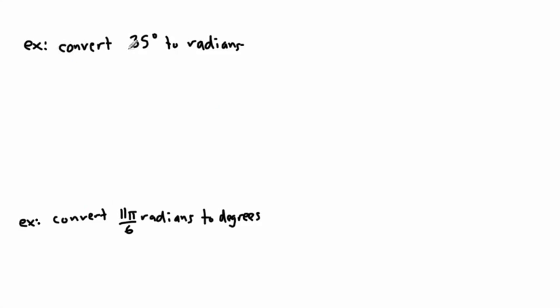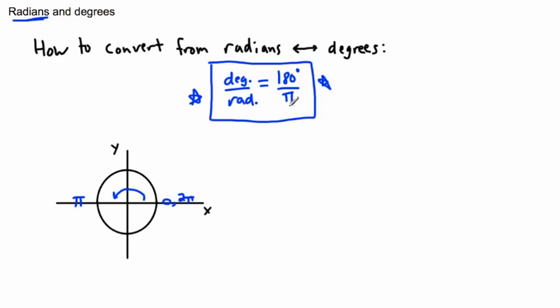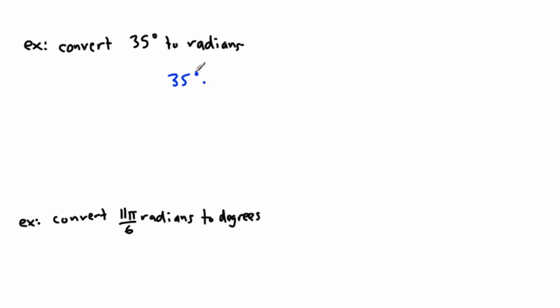I'll show you a few examples. We want to convert 35 degrees to radians. I'm going to start by writing 35 degrees. Now let's look at what units need to cancel out. I can either say 180 degrees over π or π over 180 degrees. Which one will cancel out degrees on top? I need degrees on the bottom because degrees on top divided by degrees on the bottom will cancel out. So I know this must be 180 degrees, therefore this must be π radians on top.